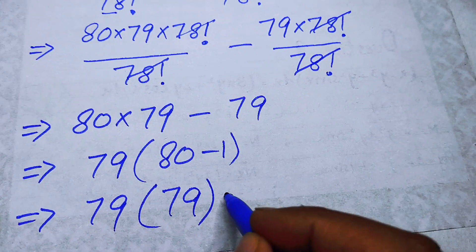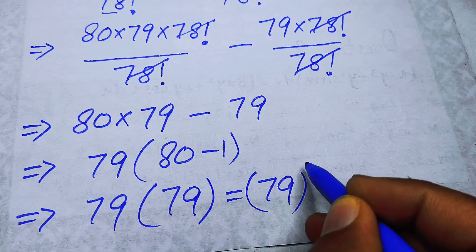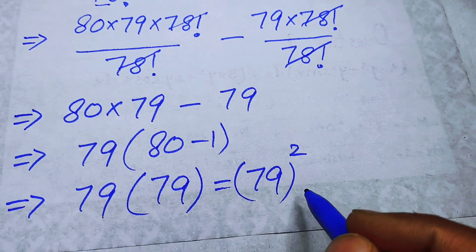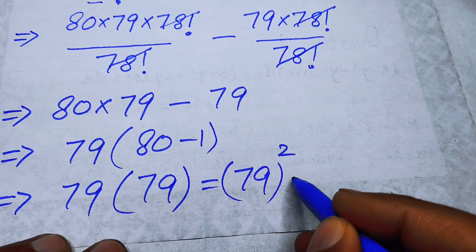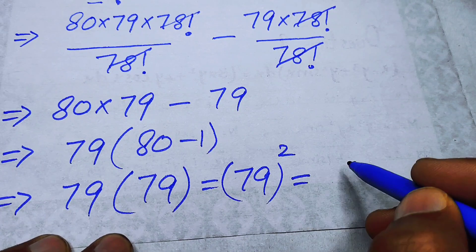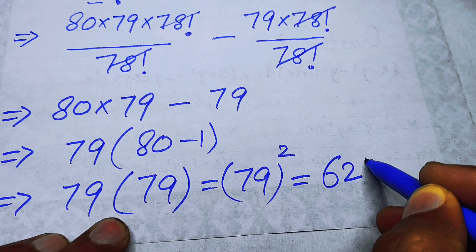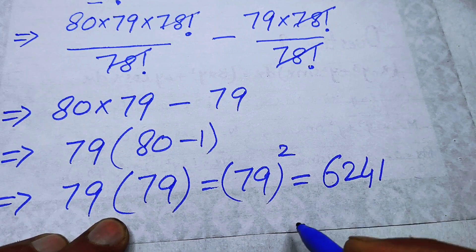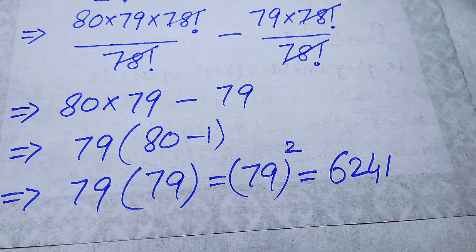Since 80 − 1 = 79, the expression simplifies to 79 × 79 = 79², which equals 6241. That is our final answer. Thank you so much for watching — please subscribe to my channel for more exciting videos.